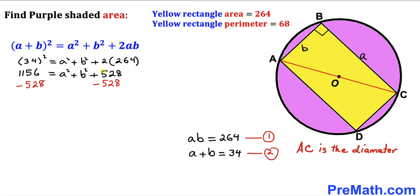Subtracting 528 from both sides, we find that a² plus b² equals 628.